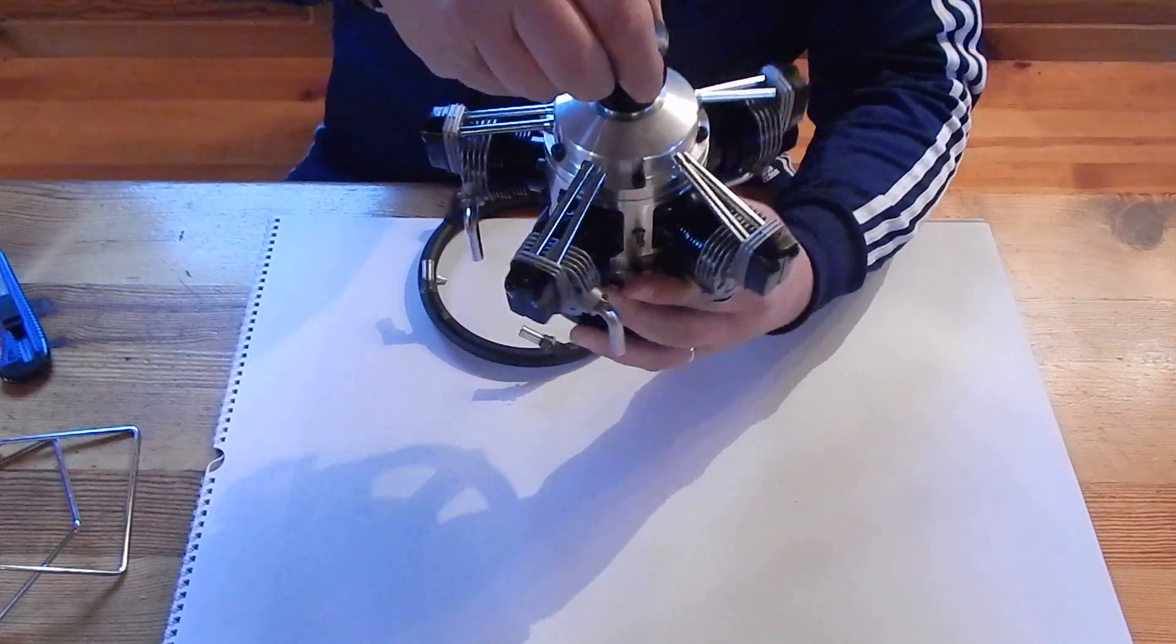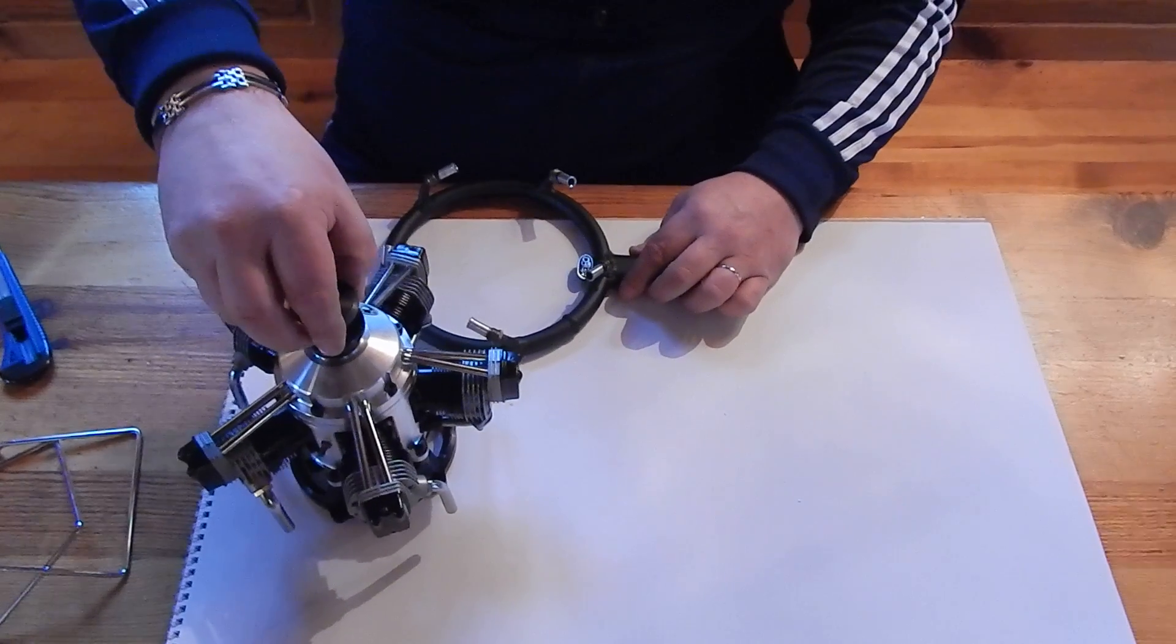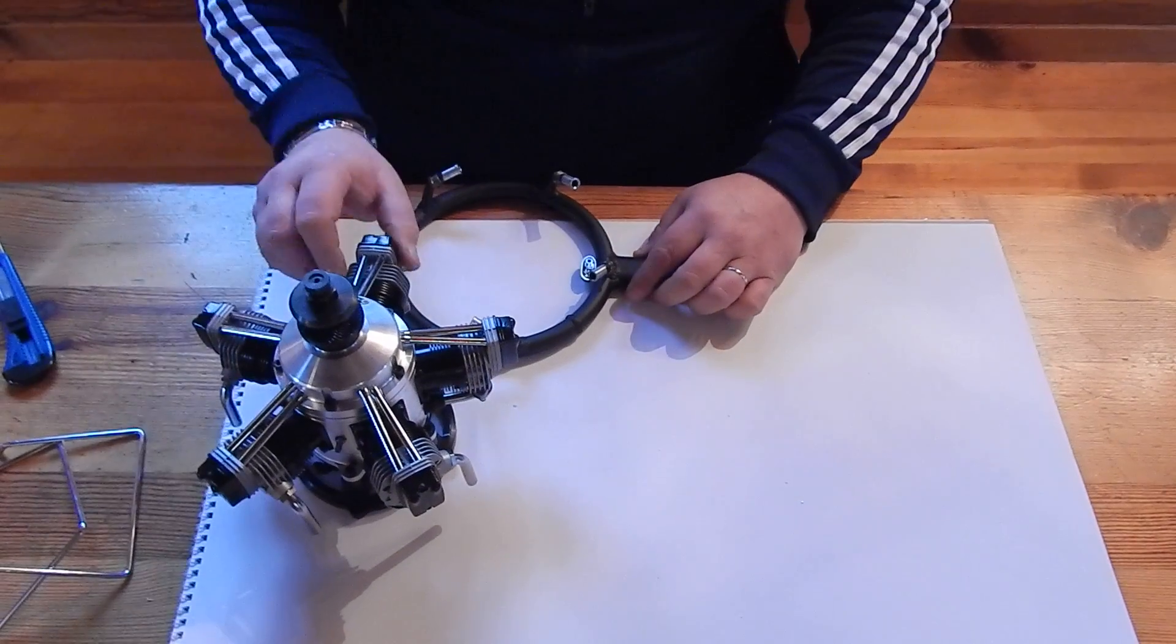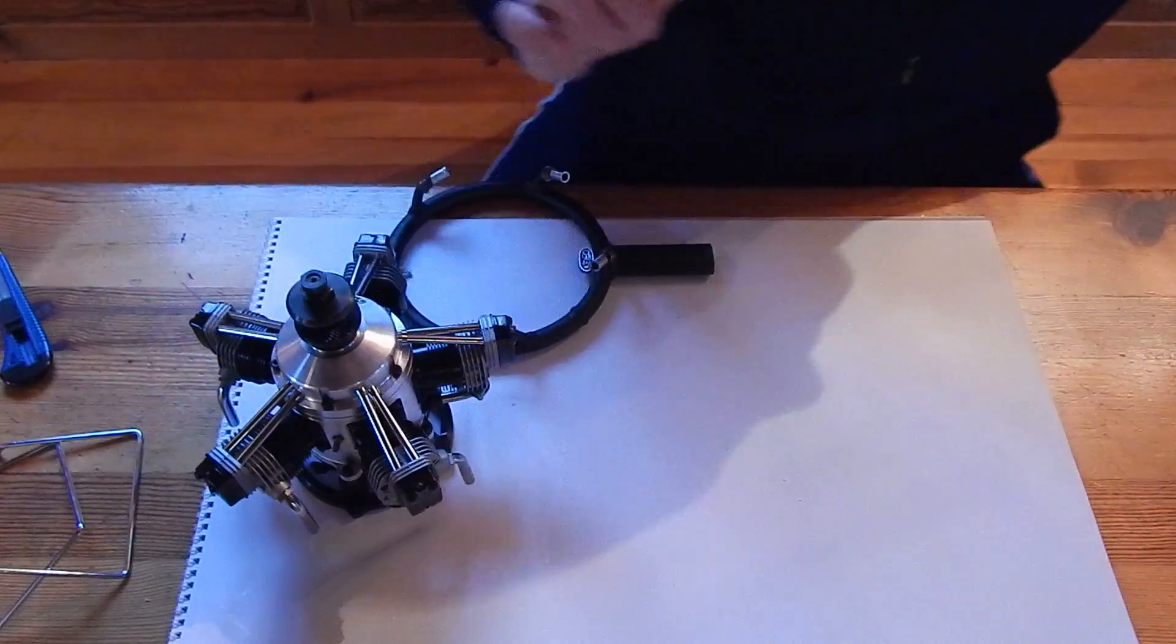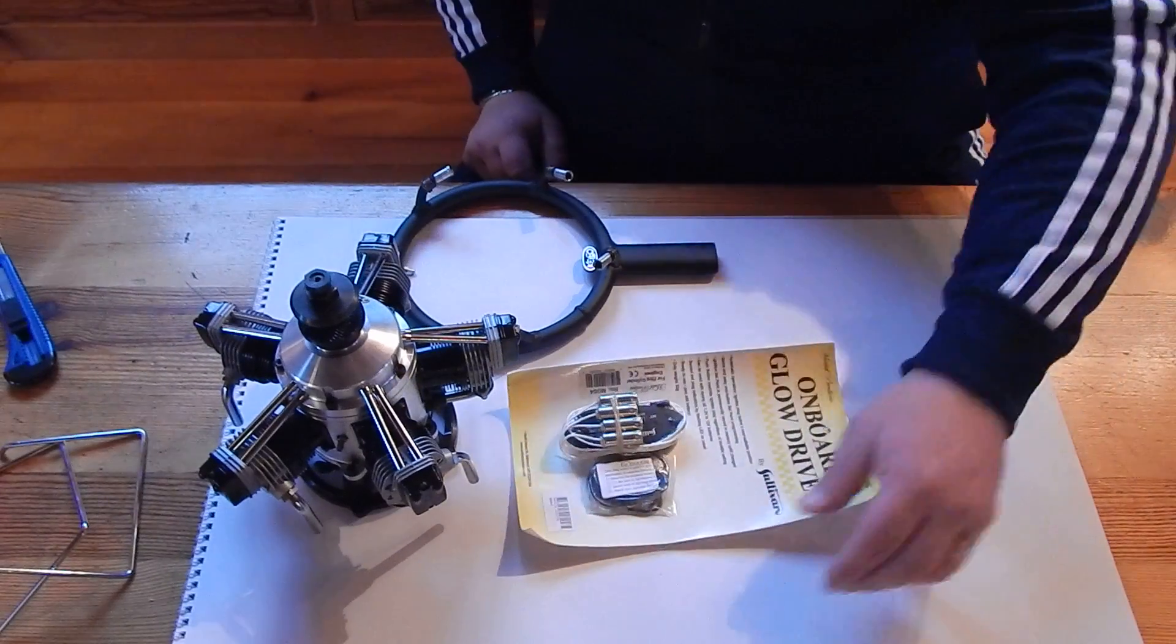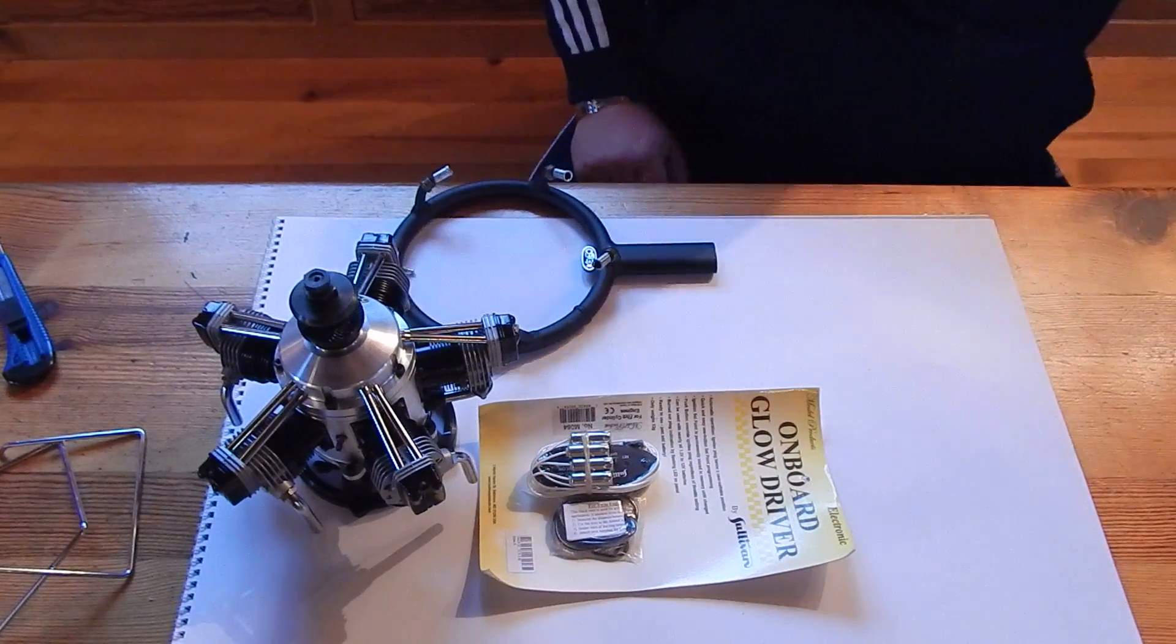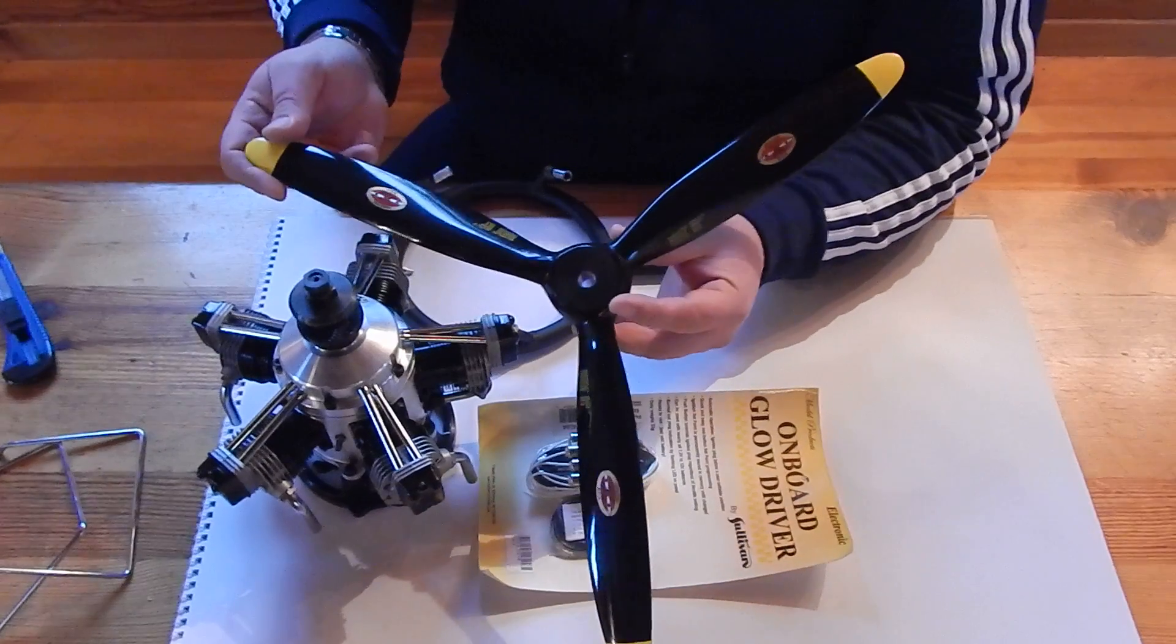So this is it. This is all you need: the engine, the exhaust, the onboard glow, and of course the right propeller.